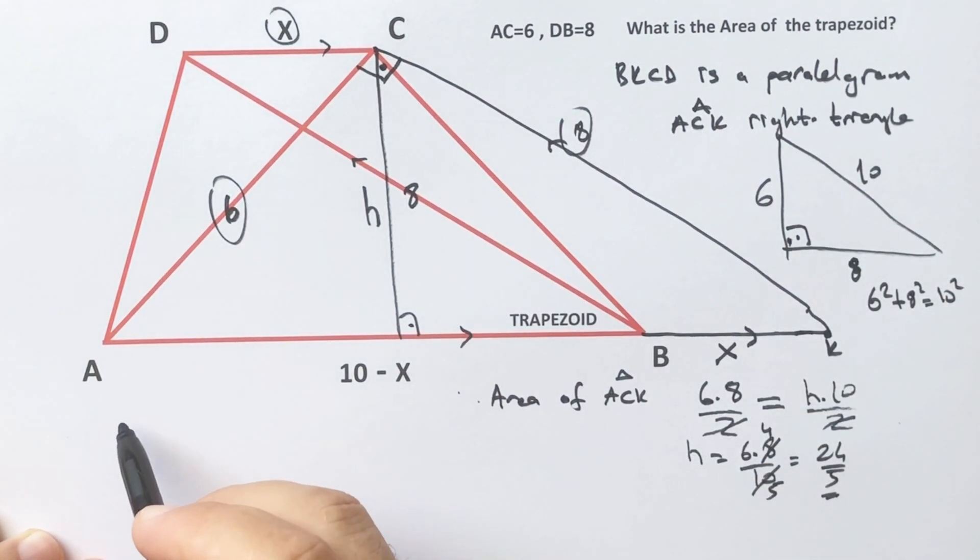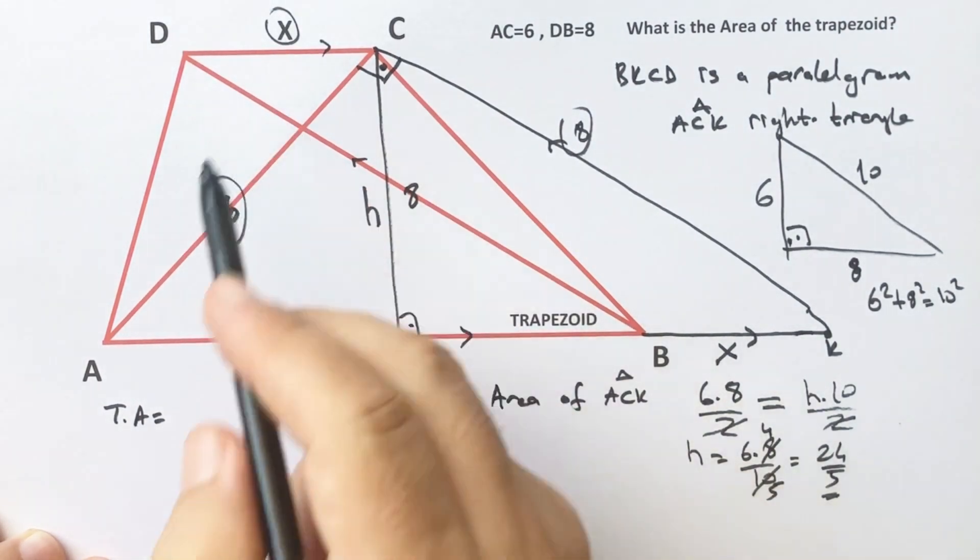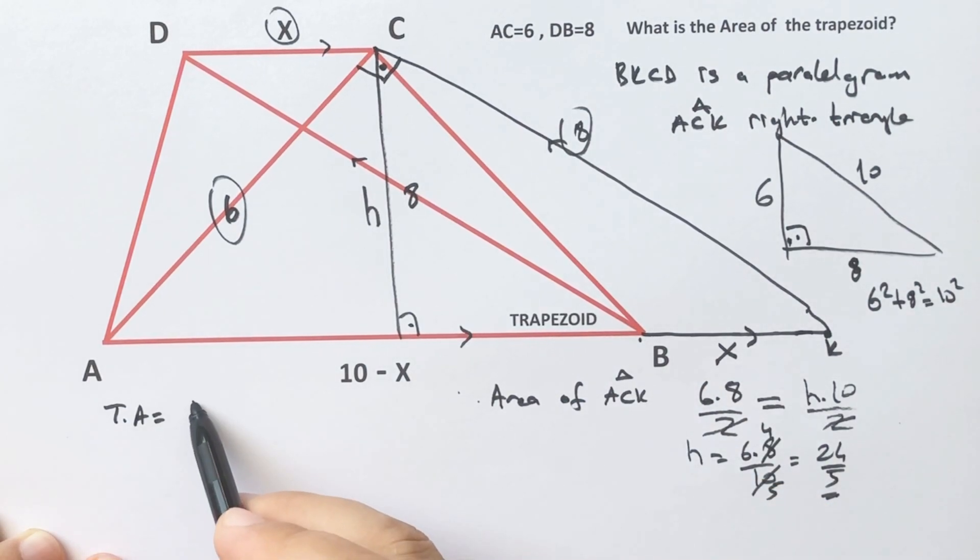The area of the trapezoid is x plus 10 minus x over 2 times the height, which simplifies to 10 over 2 times height.